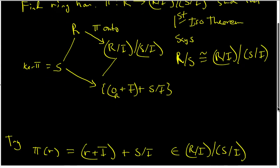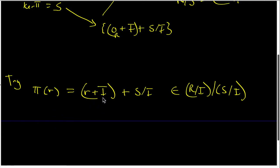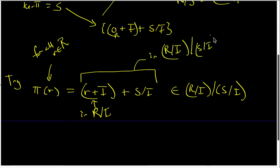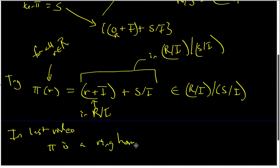In the previous video, we defined the map π(r) to be (r + I) + S mod I, which is a typical element of R mod I modded by S mod I. This definition was for all r inside the ring R. This element is in R mod I, and so that makes this element inside our target ring of R mod I modded out by the ideal S mod I. In the last video, we did show that π is a ring homomorphism from R to the target ring R mod I modded by S mod I.